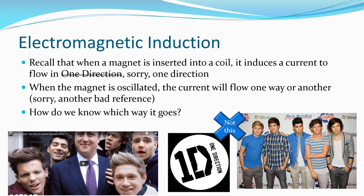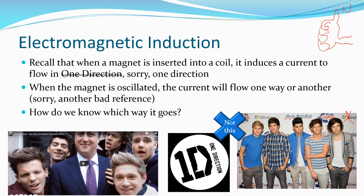When a magnet is inserted into a coil it induces a current to flow in one direction in the coil wires. A magnet going through a solenoid — the current will flow in one direction, and we have a hand rule for that. It's the one where the thumb points in the direction of north of the solenoid and your fingers wrap around showing the current direction.